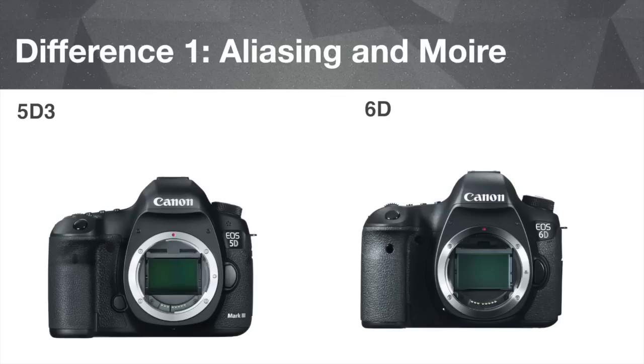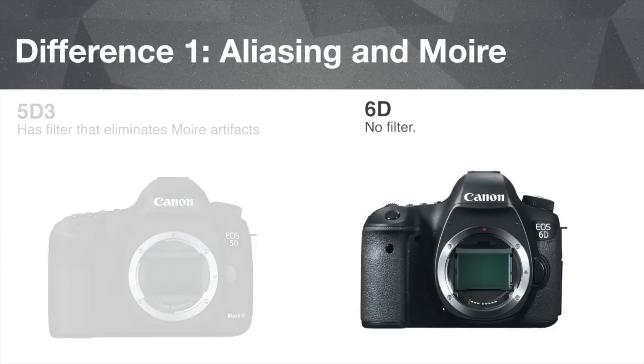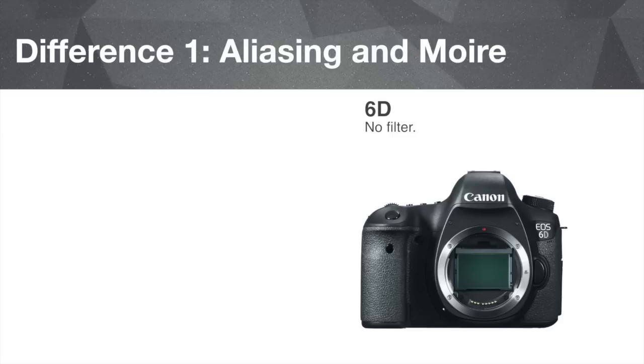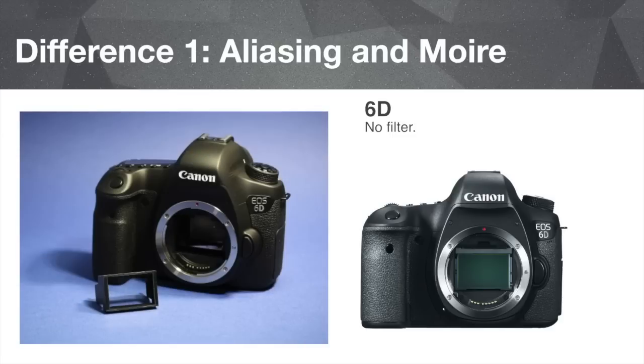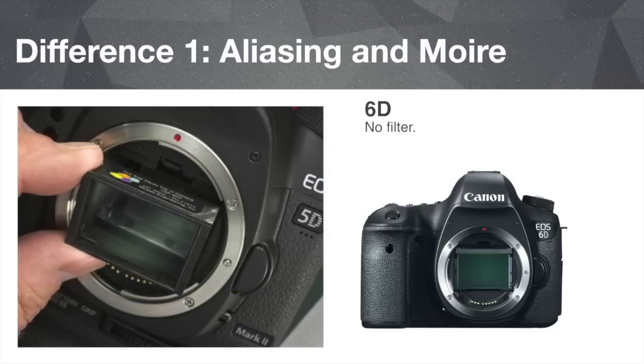What we're going to do is break down the biggest differences between the two cameras, and then I want to talk about why I chose the Canon 6D over the 5D Mark III. The first big one is aliasing and moiré. The Canon 5D Mark III has a filter built in that eliminates that artifact, so you can film brick walls to your heart's content without issues. The Canon 6D does not have a filter built in, so you will still have those problems, but you can purchase a third-party filter and install it on your camera — though you can't really use wide-angle lenses with it.